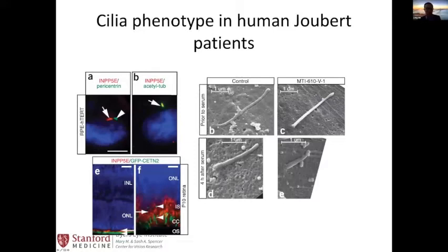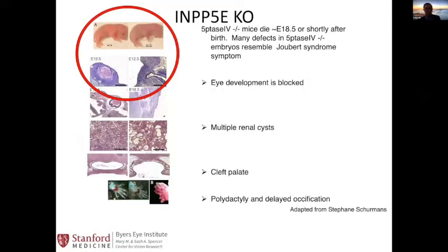If you knock out INPP5E in animals, they show a pleiotropic effect just like in humans. They have complete loss of eye formation — anophthalmia — polycystic kidneys, cleft palate, and polydactyly. These animals don't survive long and die very early postnatally. The lab is studying the effect on the optic nerve, which is of interest to optic disc drusen.